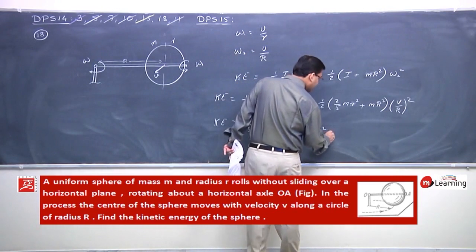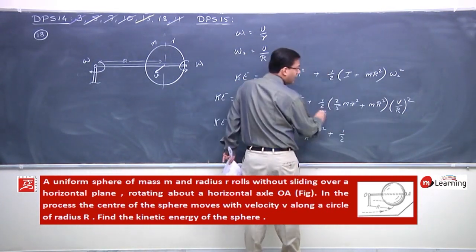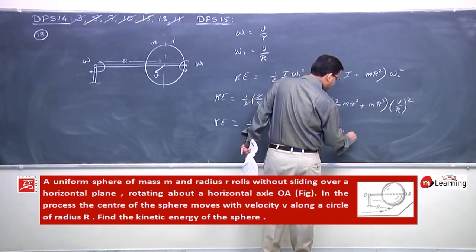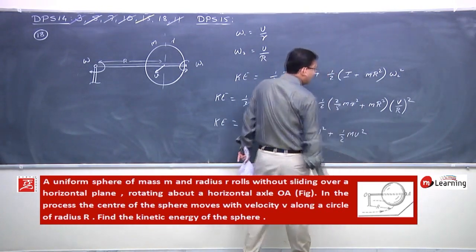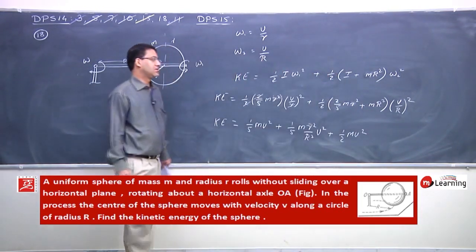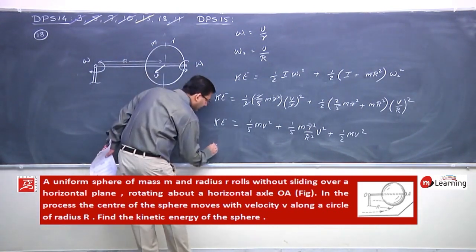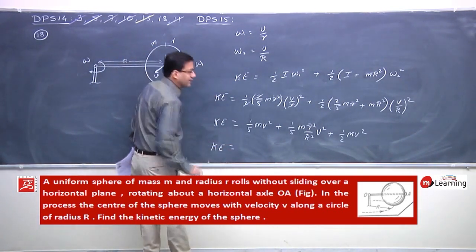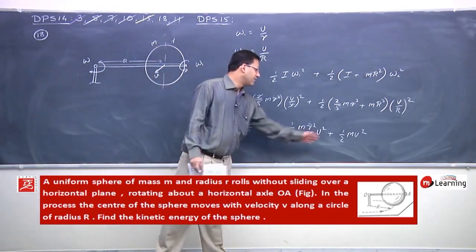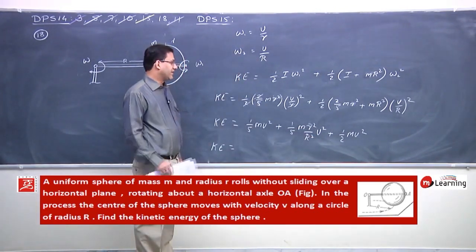Plus m v square. This this this jara se yaha kinetic energy dikhne lagi 1 by 5 plus 1 by 2, so gaya 7 by 10.